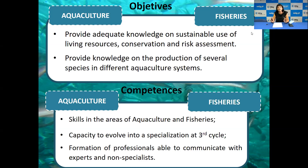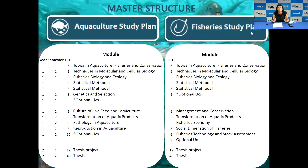This Master has two study plans — one in aquaculture and another in fisheries. Our Master runs two years and is divided into four semesters. As you can see in this slide, the first semester modules are pretty much similar across both plans. Students will have classes on topics in aquaculture, fisheries and conservation, techniques in molecular and cellular biology, fisheries biology and ecology, statistics, and optional courses.